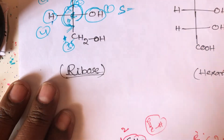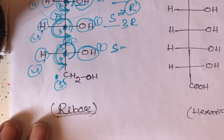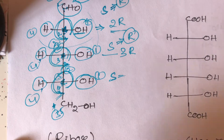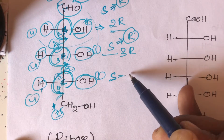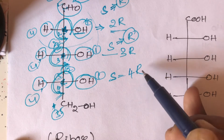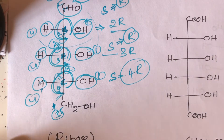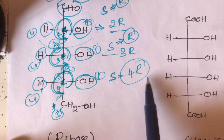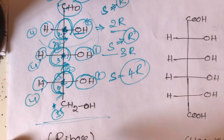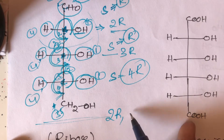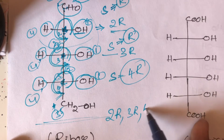For the fourth carbon: the least priority group is again on the horizontal line, so S configuration becomes R. Therefore, the fourth carbon is 4R. In the given ribose structure, all chiral centers are R configuration: 2R, 3R, 4R.